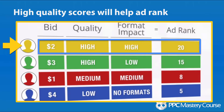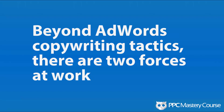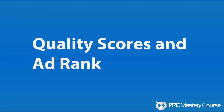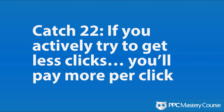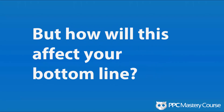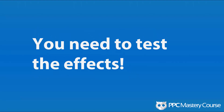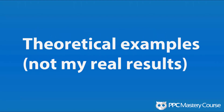As you can see, we have two forces in conflict, and we need to decide which is better — or develop a framework to evaluate that choice. Beyond AdWords copywriting tactics, there are two forces at work: quality scores and ad rank. There's a catch-22: if you actively try to get fewer clicks, you'll pay more per click. The question is how will this affect your bottom line? You need to test the effects. I want to stress that even though I showed you some ad ideas, those results are theoretical, not my real results.